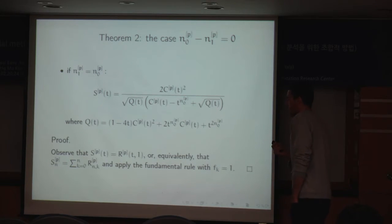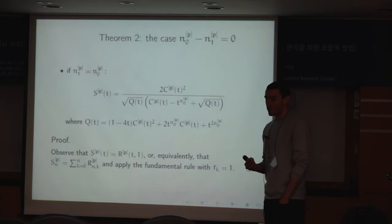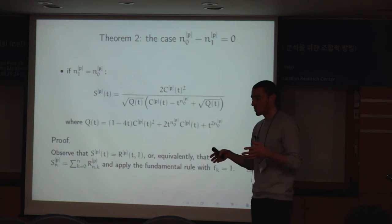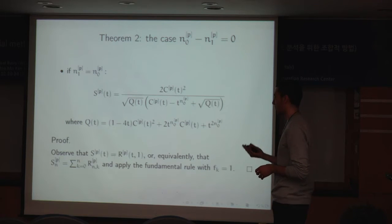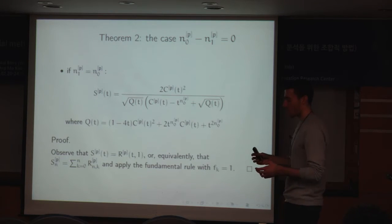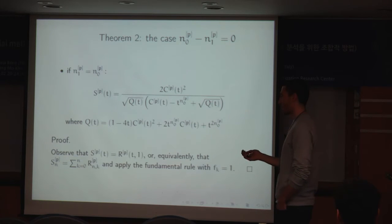The proof is quite simple: it is sufficient to observe that for counting all words with n bits 1, we can choose all words containing n bits 1 and 0, 1, 2, 3, up to n bits 0. Therefore, we instantiate with 1 the indeterminate that counts the number of bits 0, which is essentially the same as doing a matrix-vector product of matrix R with a vector of all 1s — which is the same as computing a row sum.